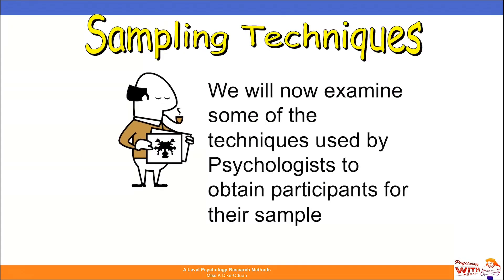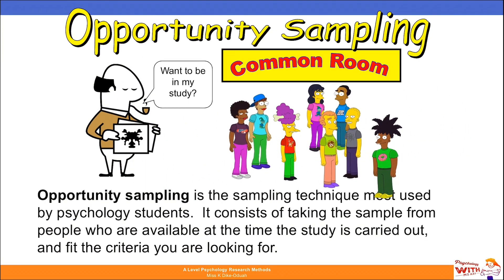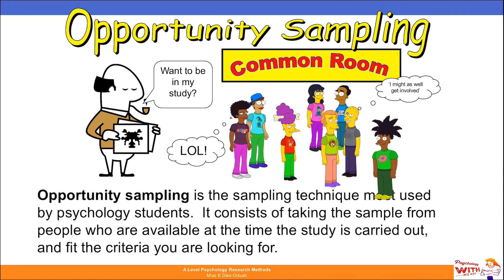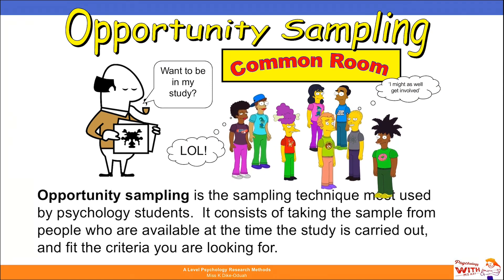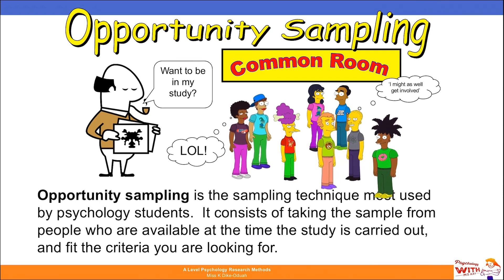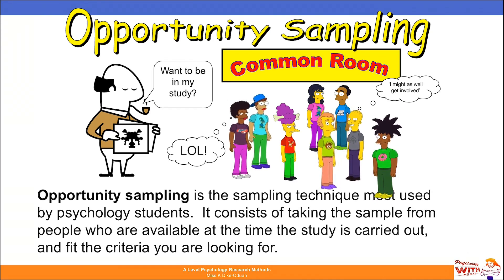We will now examine some of the techniques used by psychologists to obtain participants for their sample. First we have opportunity sampling — the psychologist is asking prospective participants whether they would want to be in the study. Opportunity sampling is a technique most used by psychology students and psychologists. It consists of taking the sample from people who are available at the time the study is carried out and fit the criteria you are looking for.